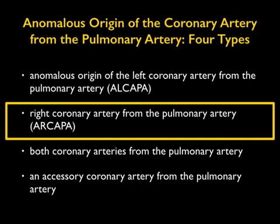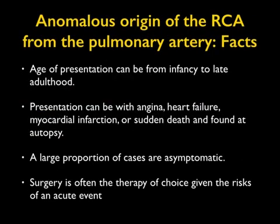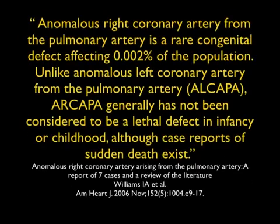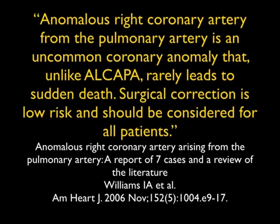There are actually four types of anomalous origin of a coronary from the pulmonary artery: L-CAPA, R-CAPA, both coronaries from the PA, and accessory coronary from the pulmonary artery. Patients can present across an age range with angina, heart failure, or infarction, and some are asymptomatic. Surgery is typically the therapy of choice. It's a rare anomaly — 0.002% — but a very important diagnosis, particularly in childhood but also in adulthood. Notably, L-CAPA leads to death while R-CAPA seems not to.